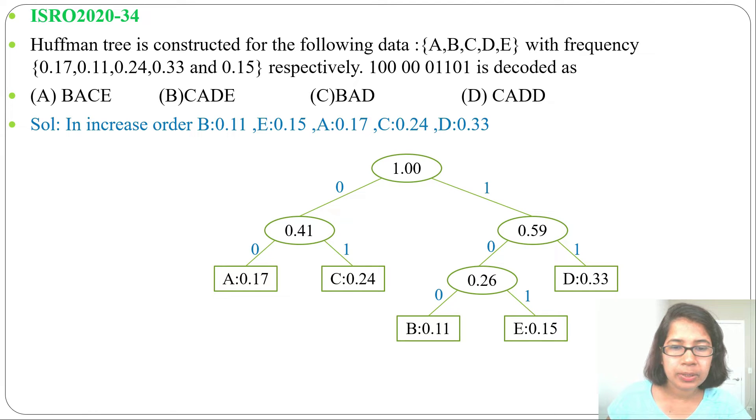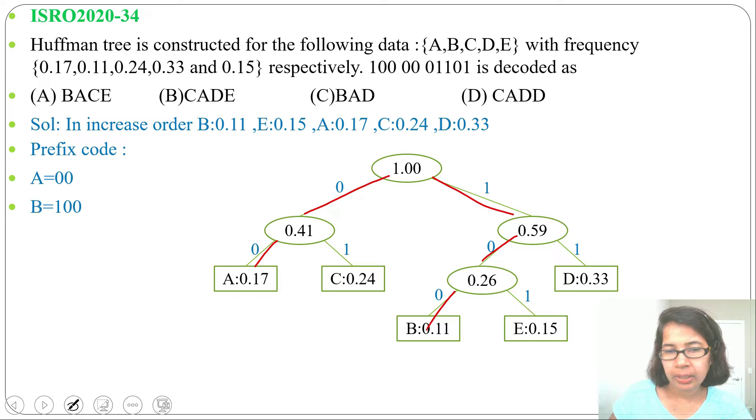Next we will find prefix code for each alphabet. A prefix code is 0, 0, B prefix code is 1, 0, 0, then C prefix code is 0, 1, D prefix code is 1, 1, and E prefix code is 1, 0, 1.